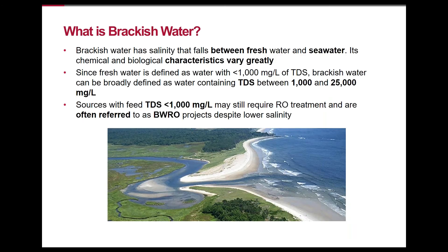This presentation is about brackish water reverse osmosis, which means we first need to define brackish water. This is a classification that falls between fresh water and seawater. Fresh water is any water with less than 1,000 milligrams per liter of total dissolved solids, so brackish water falls between 1,000 mg/L and about 25,000 mg/L of TDS. Some sources that have technically fresh water — less than 1,000 ppm — may still require RO treatment and may still be referred to as brackish water RO projects that use brackish water membranes, just as a shorthand.